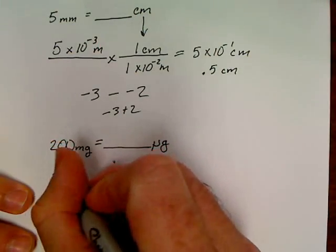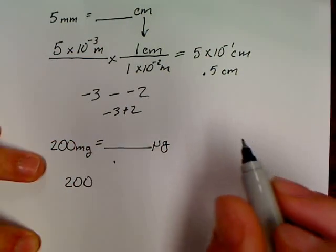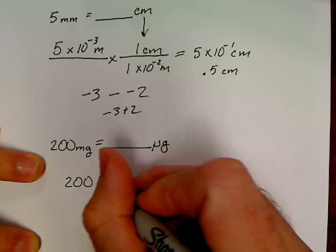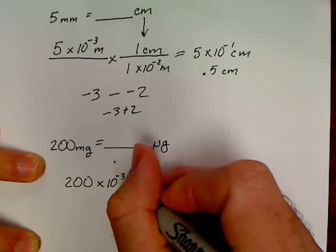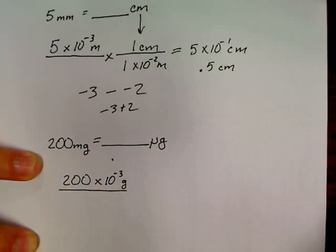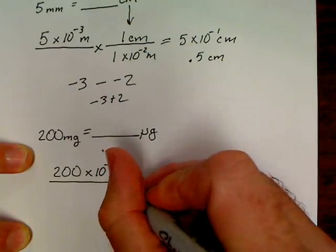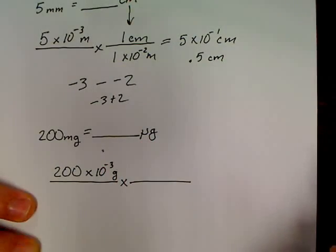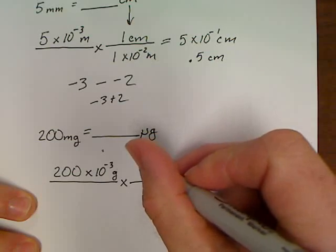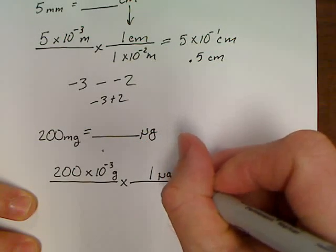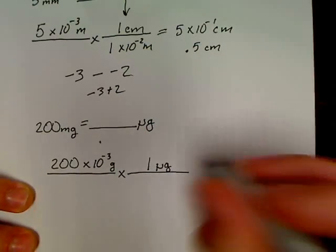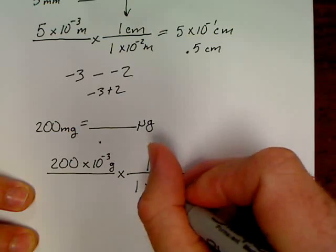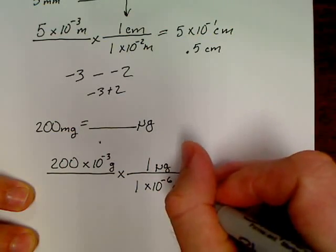Start by writing 200, but don't write down milli. Write down milli means 10 to the negative 3rd grams. So, we've already got our first converted version in our head. Put our X. Draw our line. We're converting to micrograms, so it goes on top right here. 1 microgram on top. On bottom, we'll write 1 times 10 to the negative 6 grams.